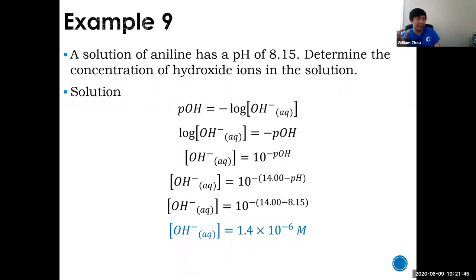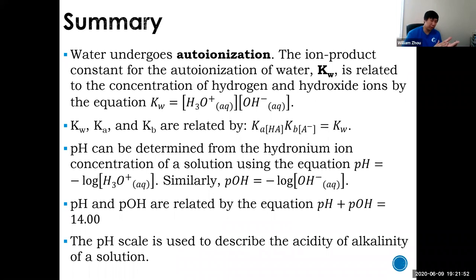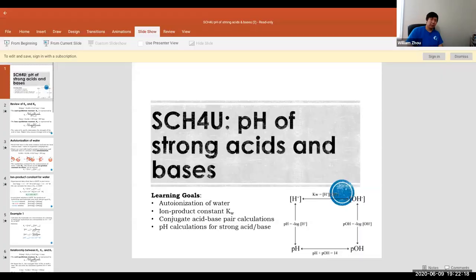So that's how to calculate pH and pOH of strong acids and strong bases. We learned auto-ionization of water, what Kw is, and the relationship between Ka, Kb, and Kw — they must be conjugate acid-base pairs and multiply to give Kw. We also learned to calculate pH using negative log of hydronium, pOH using negative log of hydroxide, and that pH plus pOH equals 14.